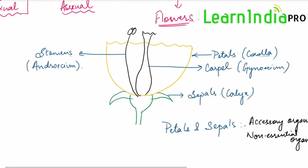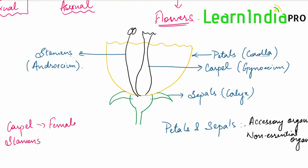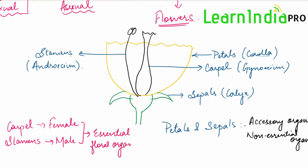Talking about carpel and stamens: carpel denotes the female reproductive part, stamen denotes the male reproductive part, and these are the organs where gametes will be formed. So these are called essential floral organs. All these parts are attached to a swollen base called the thalamus.